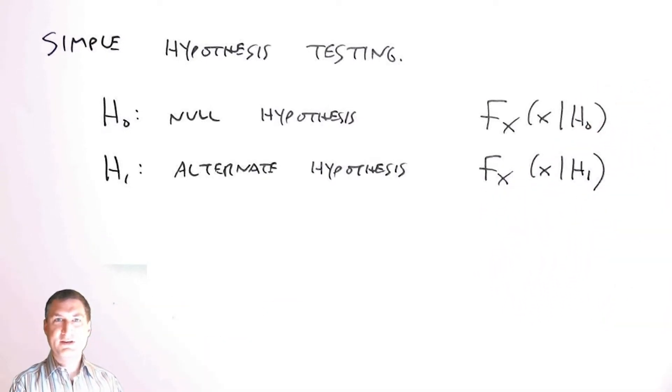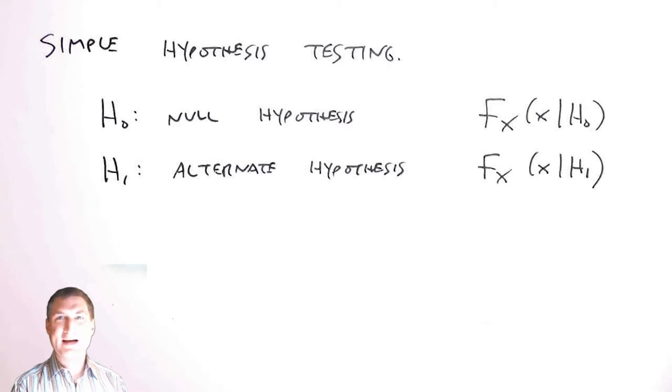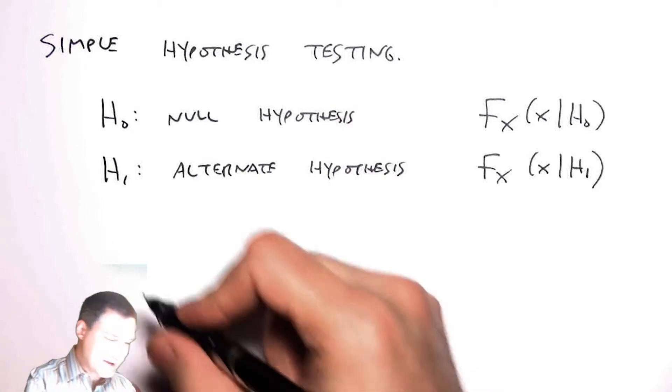So kind of before we talked about these under the name class conditional probabilities. Remember we had this example with salmon and tuna. This is actually the same example, just given in either way. And so again, I have a decision rule that says if this sum of X's, for example, is above a certain value, I choose H1. Otherwise, I choose H0.